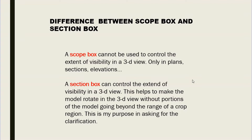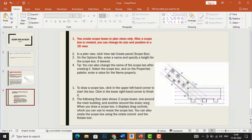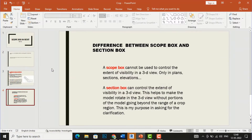You can draw a section box in a 3D view, but a scope box you draw in plan view, elevation view, or section view — and then it will be visible in a 3D view. Scope box is used for larger projects and more detailed work, while section box you can draw directly in a 3D view. That is the difference between scope box and section box.